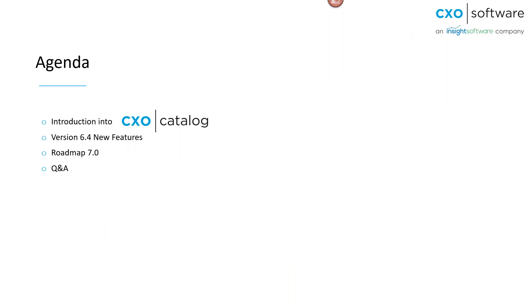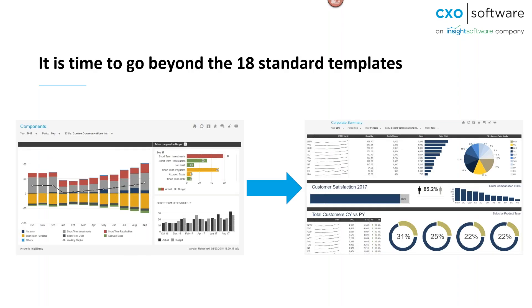Today's session is similar to what we did with customers last week, but today we will focus more on what's in it for partners, focusing first on the CXO catalogue and then looking at other new features. Until release 6.4, the majority of our customers were using customized reports. Some time ago we produced 18 standard templates which are available within CXO. Those templates are often used as inspiration or a starting point, but not as the final dashboards customers use.